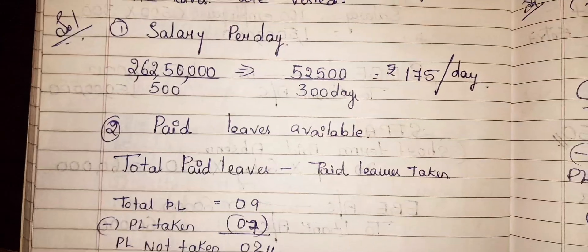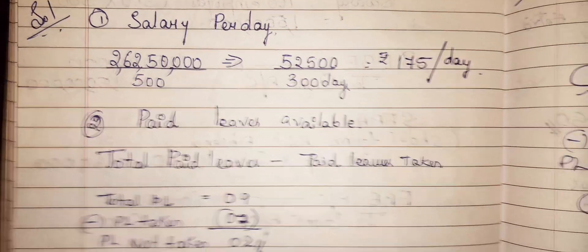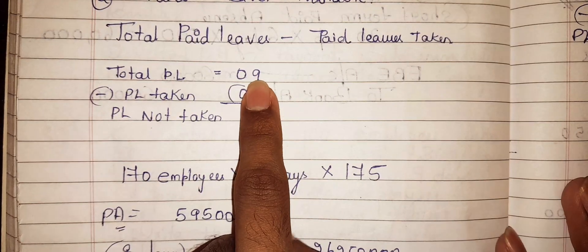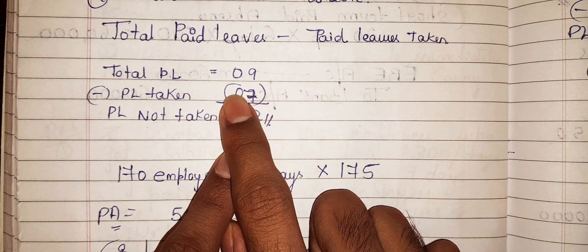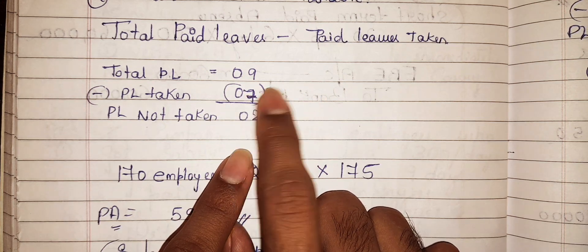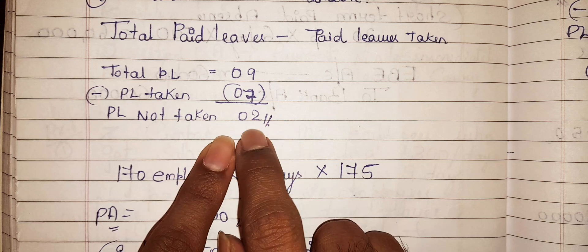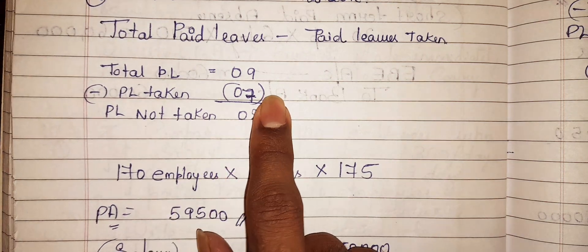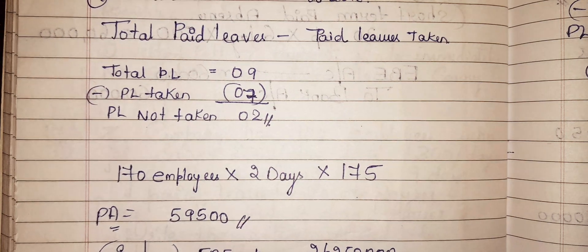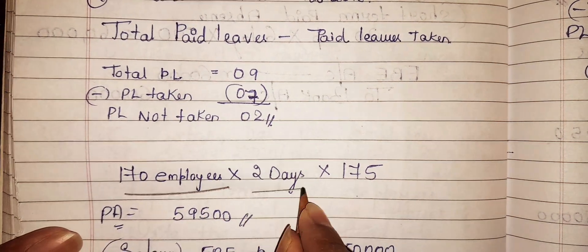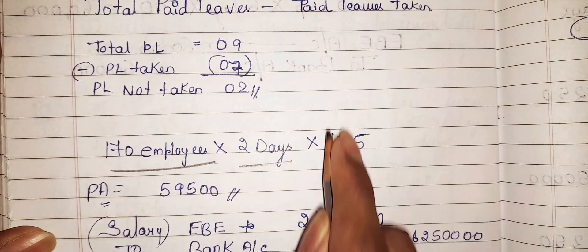Now we calculate the total paid leaves balance. Each employee gets 9 paid leaves. Since 170 employees have not taken 2 days, they have 7 days remaining. So the paid absence is 170 employees × 7 days × ₹175 per day.